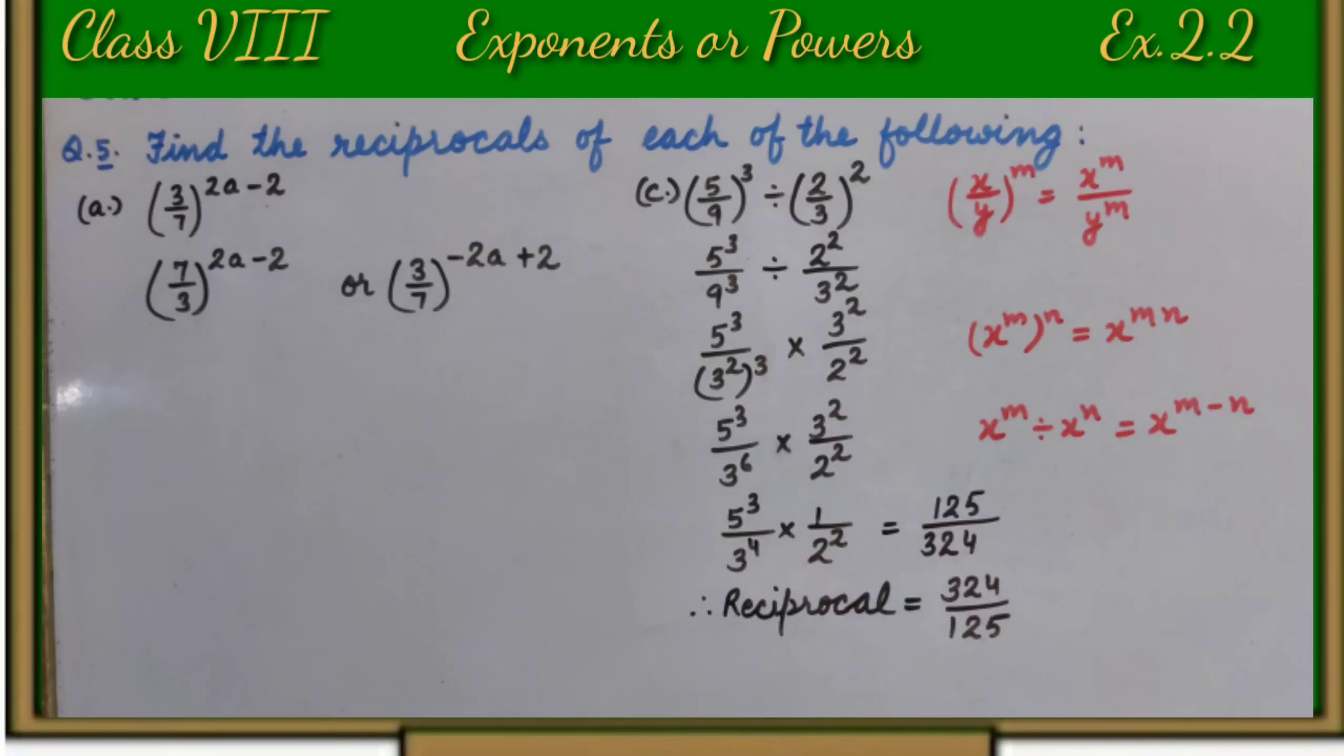So the answer is 7 upon 3 whole raise to power 2a minus 2, or 3 upon 7 whole raise to power minus 2a plus 2.